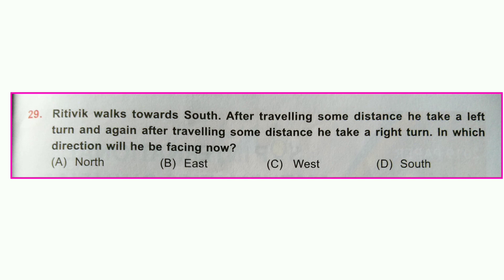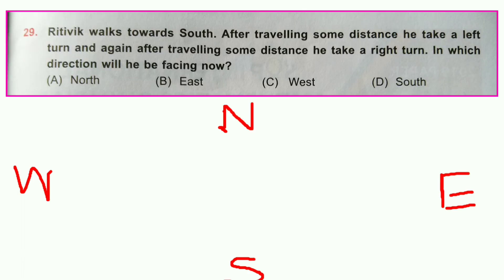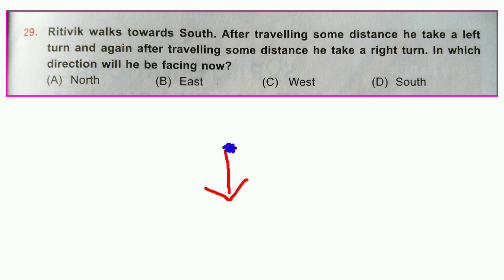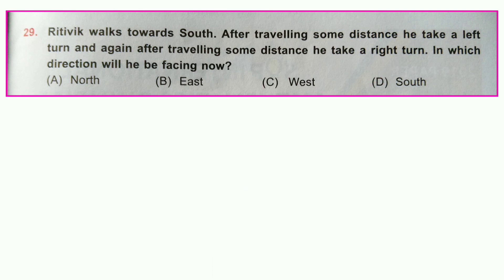Question number twenty-nine: Rithvik walks towards south; after traveling some distance he takes a left turn, and after traveling some more distance he takes a right turn. In which direction will he be facing now? The red line is south, the green line is left (east), and the blue line is right (south). He is facing south again. Option D is correct: south.